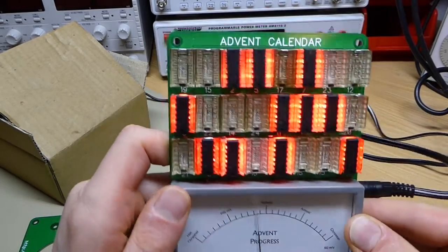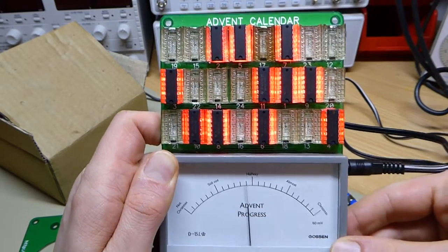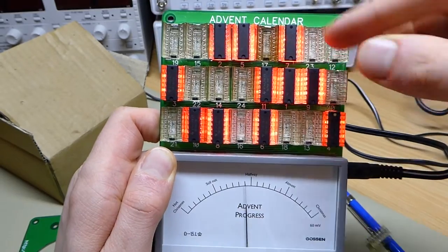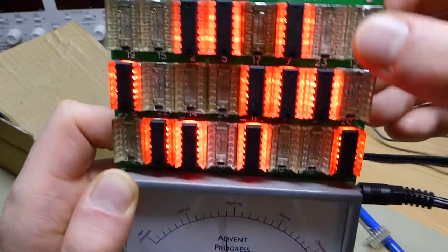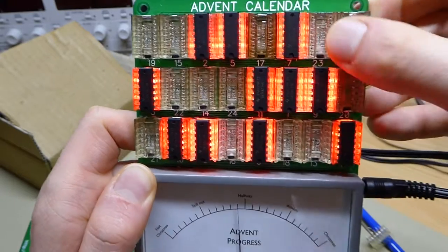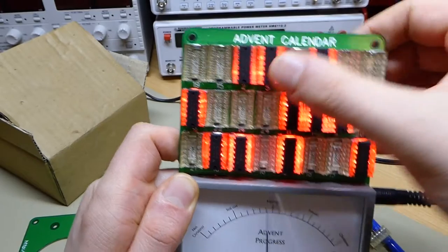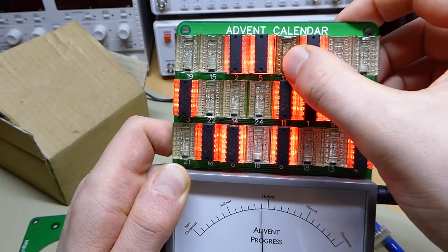However, one thing that happened as I went on and put a couple of days in is that because the sockets are quite close, even between the columns and especially on the rows—you can see there's barely any gap between them at all—I got a lot of light bleeding between adjacent sockets. For example, here you can see these three sockets are on and this one is off.